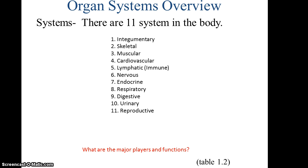The nervous system. The endocrine system, which is the glands that cause various responses in our bodies. The respiratory system for breathing. The digestive system for bringing in nutrients into the body. The urinary system for getting rid of wastes produced by the cells. And the reproductive system, necessary for any species to continue. This is all found in table 1.2. You will need to know the main players and the main functions of these different systems.